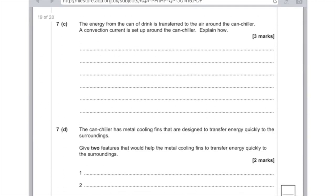The energy from the can of drink is transferred to the air around the can chiller. A convection current is set up. Explain how. The air particles spread out, which causes them to become less dense, and therefore the warm air rises. Your standard convection answer.